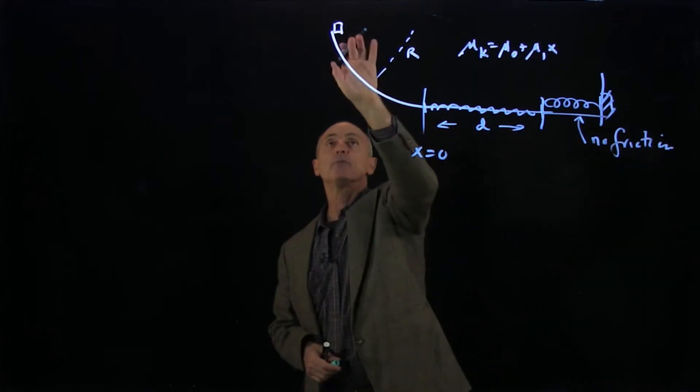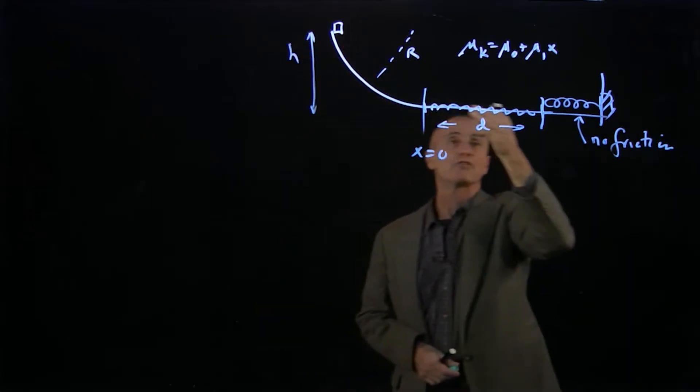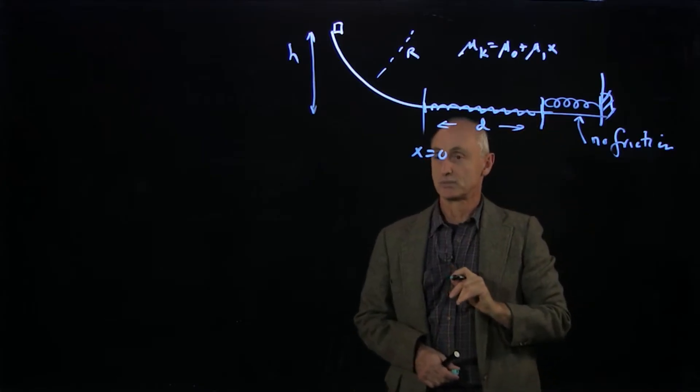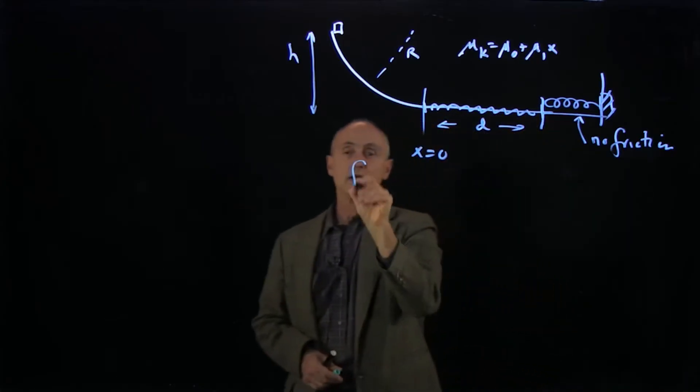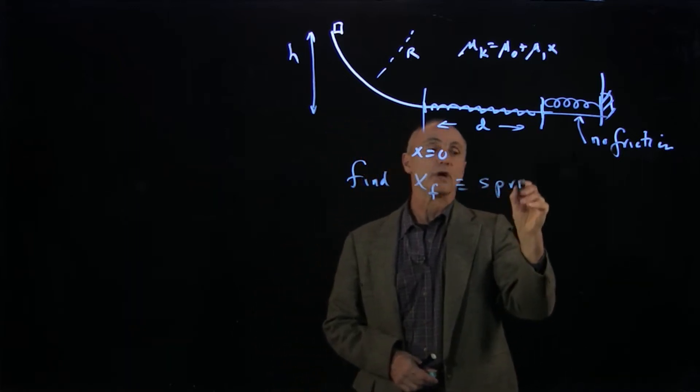And here there's no friction. Now, assuming we have enough height here h, so that this block will slide across the friction, make it all the way across and start compressing the spring, what I'd like to find is how much the spring has been compressed.